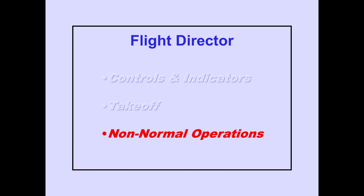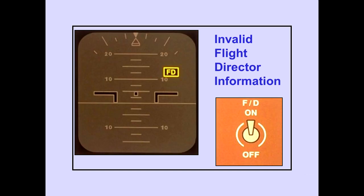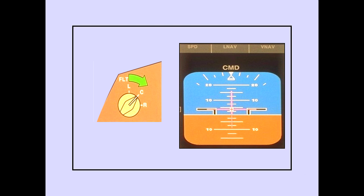Now we will discuss non-normal flight director operation. The command bars are no longer displayed when no flight director information is being received. The flight director flag is displayed when the flight director information is invalid. In addition, the command bars are no longer displayed. Selecting a different flight control computer restores flight director information.